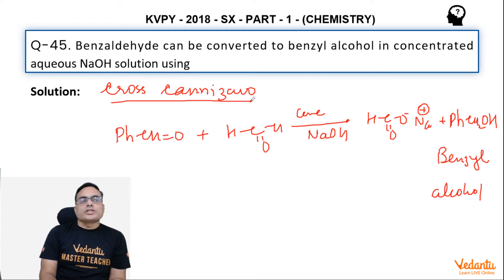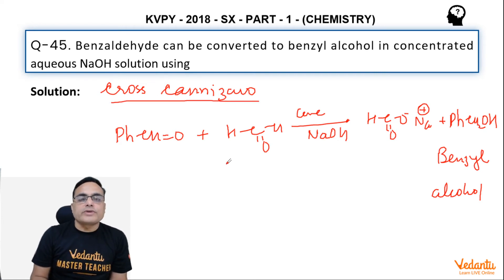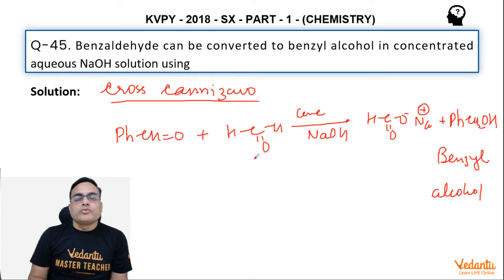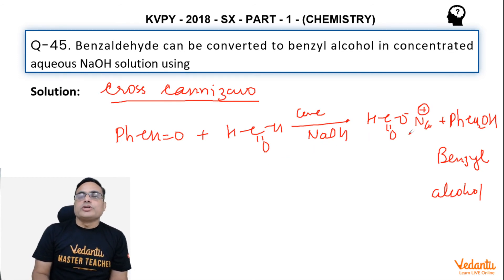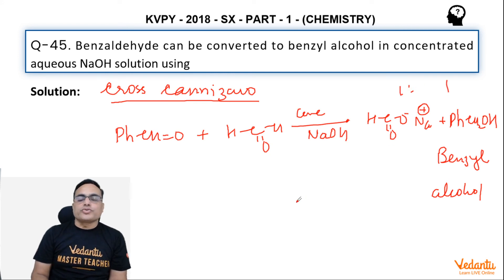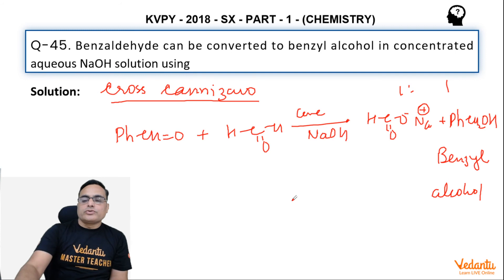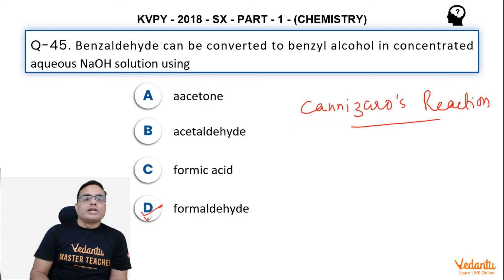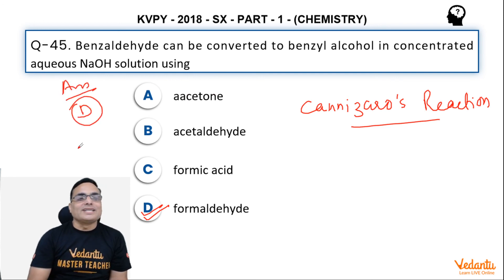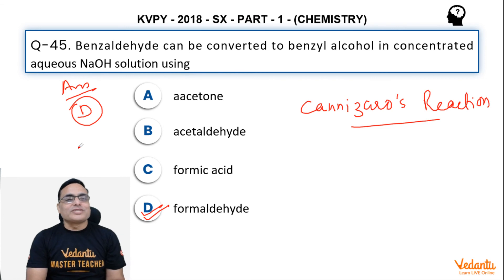Cross Cannizzaro reaction is the reaction in which two aldehydes without alpha H are treated with concentrated alkali. The less crowded one is preferably oxidized and the other is reduced. The number of carbons remains the same in both cases, and the products are formed in a 1:1 ratio. So our answer is formaldehyde — option D.